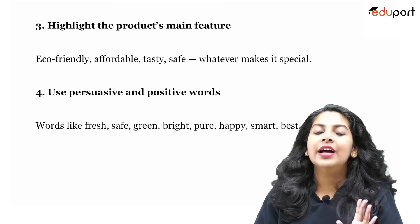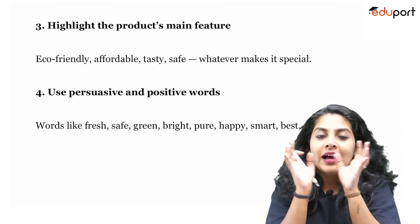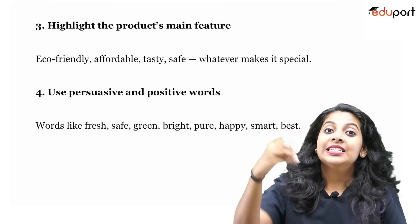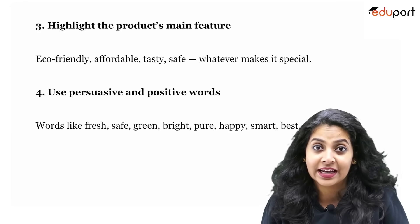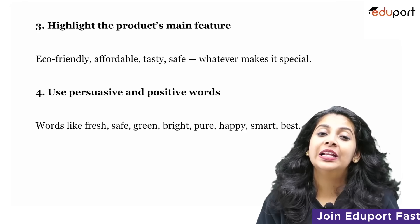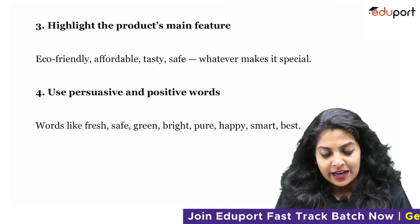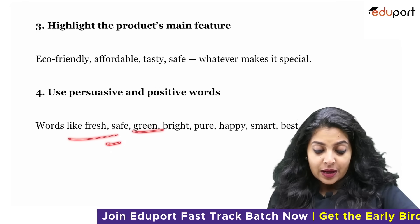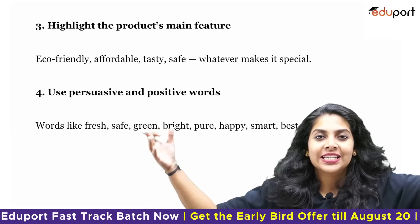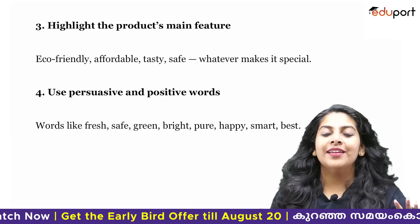Main feature: the product's main feature is quality. Highlight that in the jingle. Next, use persuasive and positive words — positive, safe, green, bright, pure, happy, smart, best. That's why positive words are used.